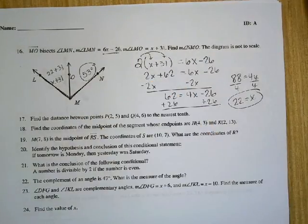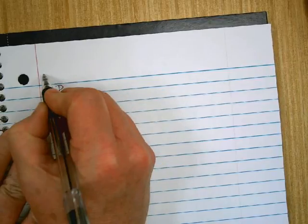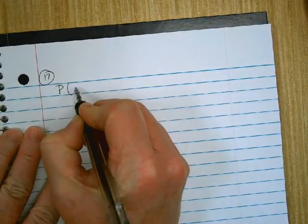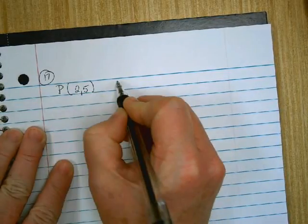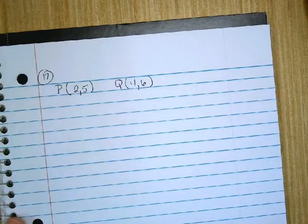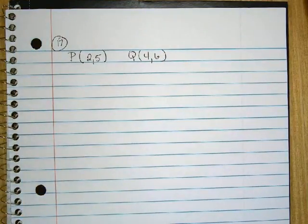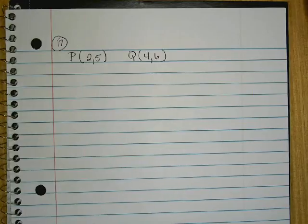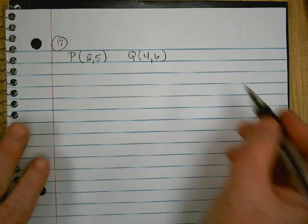Any questions on that? 17 says find the distance between P, which is at (2,5), and Q, which is at (4,6). What did you do on this problem? You've got to use the distance formula. What does the distance formula say?